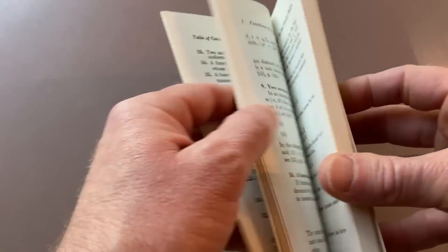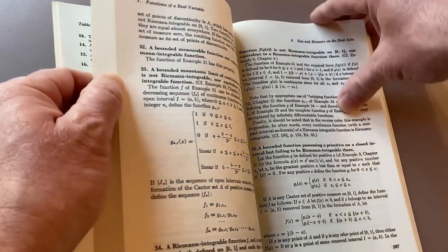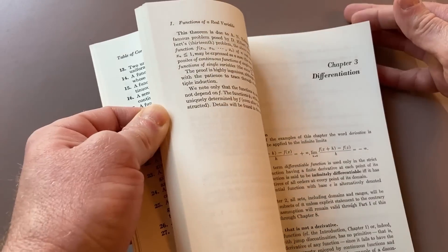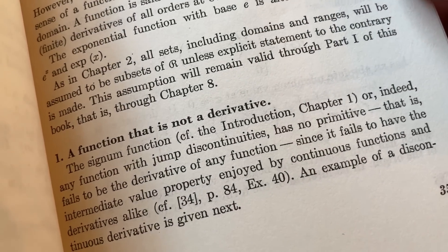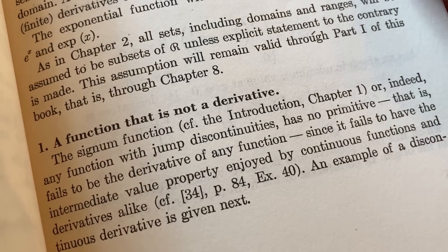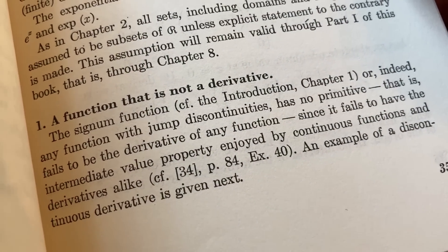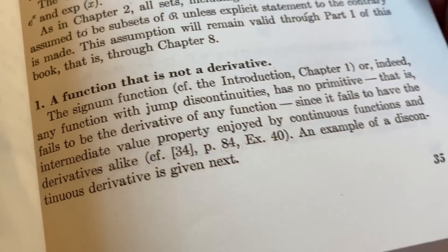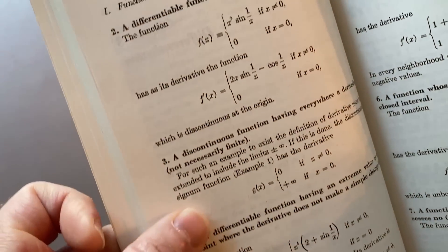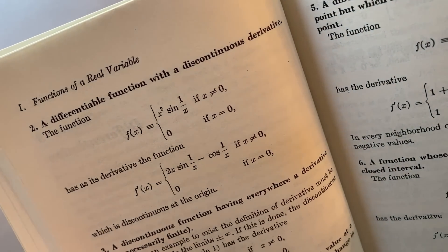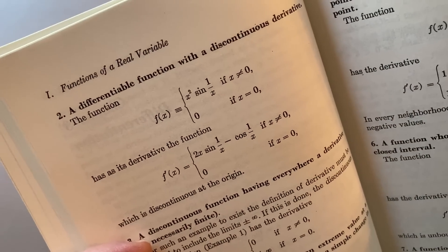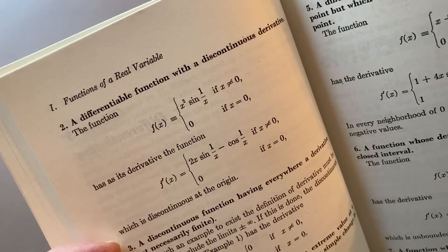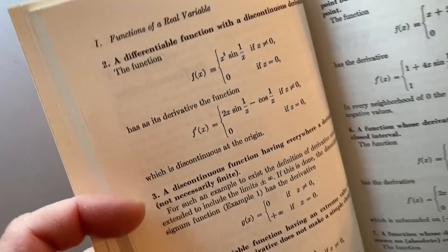There are also things like two uniformly continuous functions whose product is not uniformly continuous, a discontinuous linear function, and then differentiation. A function that is not a derivative — let's look at that on page 35. The signum function, or indeed any function with jump discontinuities, has no primitive; that is, it fails to be the derivative of any function, since it fails to have the intermediate value property enjoyed by continuous functions and derivatives alike. An example of a discontinuous derivative is given next: a differentiable function with a discontinuous derivative. This is actually a function I used to have as a test question in one of my calculus courses, which is kind of fun.